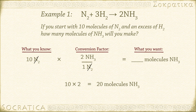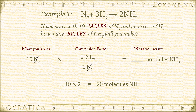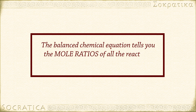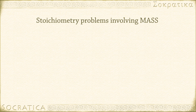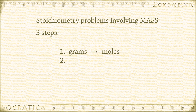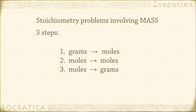In this stoichiometry problem we went from molecules to molecules. It's the same kind of conversion as going from moles to moles. If you start with 10 moles of N2, you'd get 20 moles of NH3. The balanced chemical equation tells you the mole ratios of all the reactants and products. It gets a little more complicated when talking about mass — going from grams to grams — but the general idea is the same. It takes three steps: grams to moles, then moles to moles, then moles to grams. We'll tackle those types of stoichiometry problems in part 2.